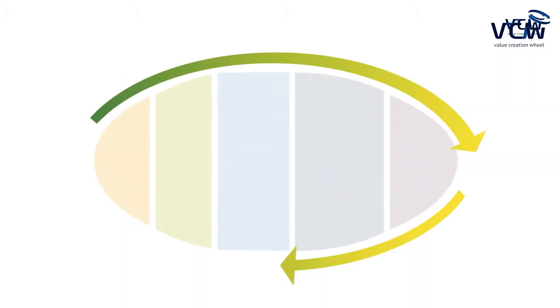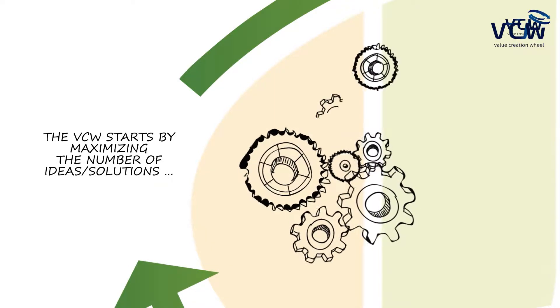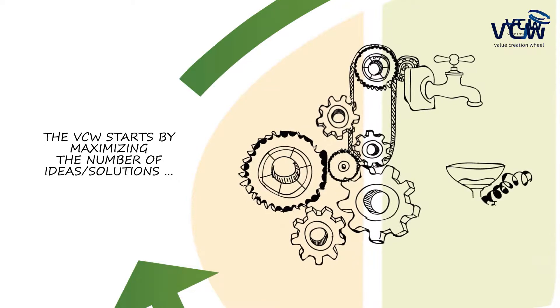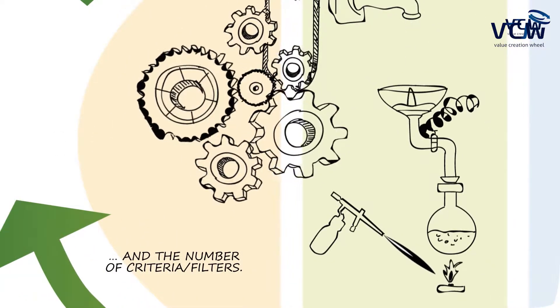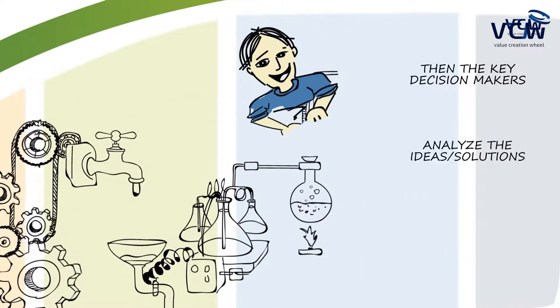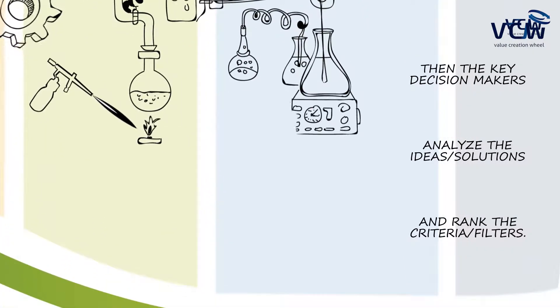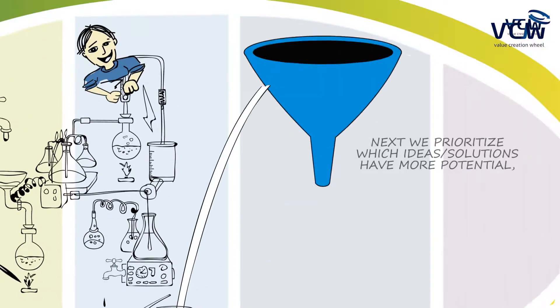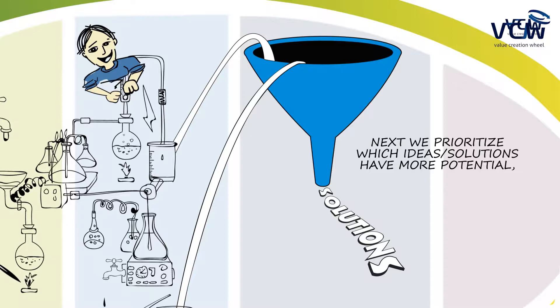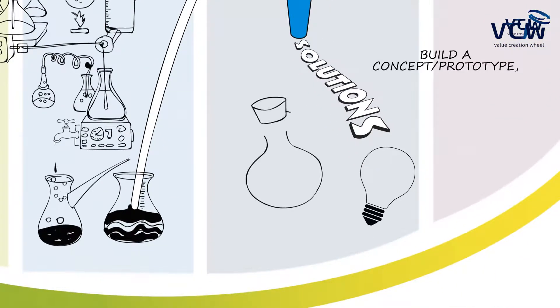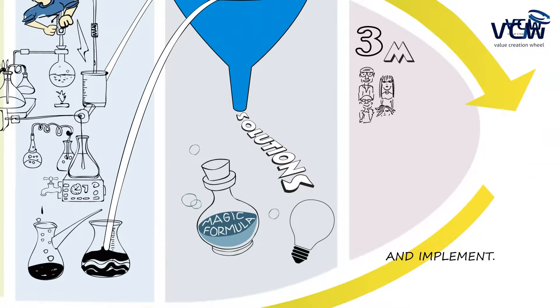Something very unique about the VCW is that we separate the solutions from the filters. To solve a particular problem, we generate hundreds of solutions and hundreds of filters and we don't mix them. Many other tools put everything into the same bag — in our case, no. We bring both solutions and filters to the key decision makers so they can take an informed decision, with much more data on the pros and the cons.